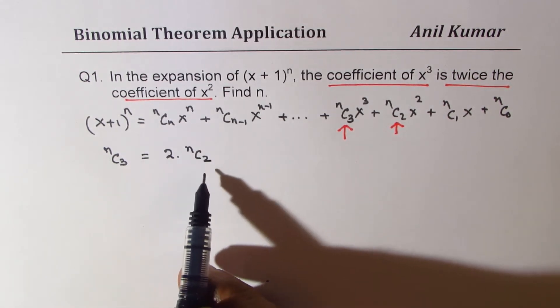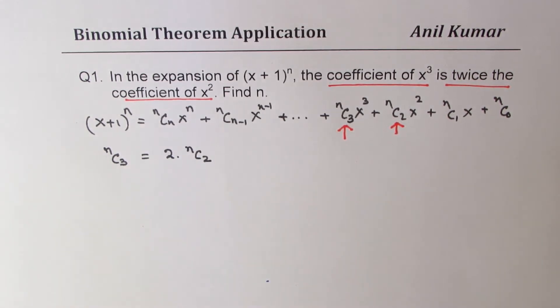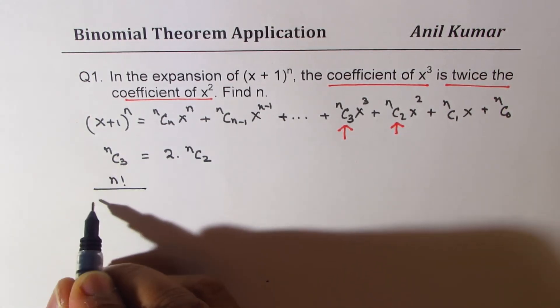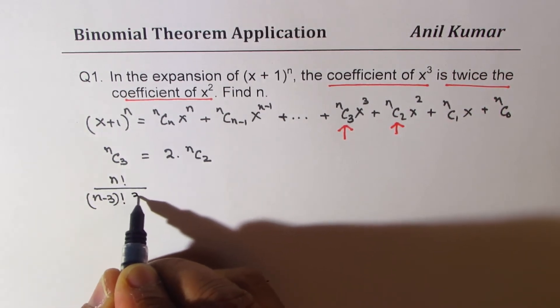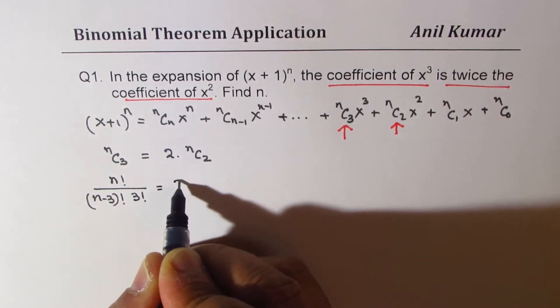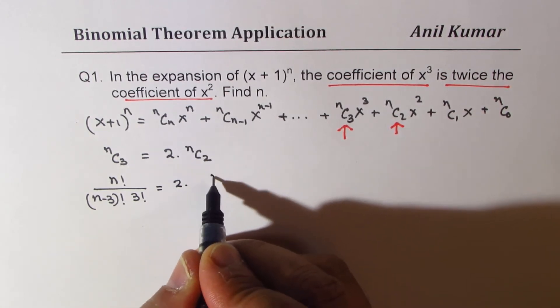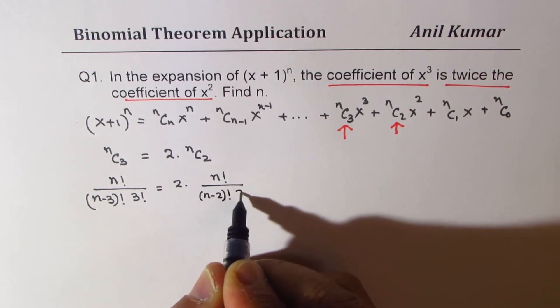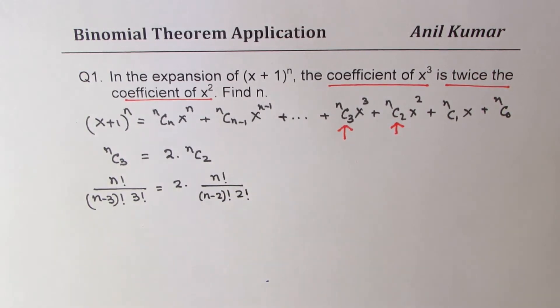So from here, we can find what n is. That gives us n! / [(n-3)! × 3!] equals to twice n! / [(n-2)! × 2!], right?